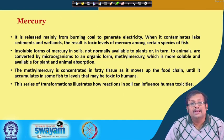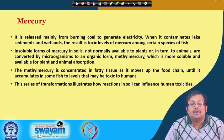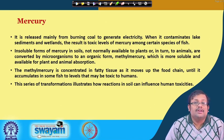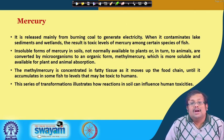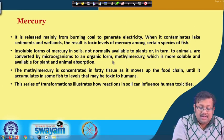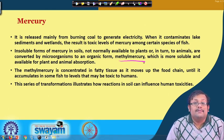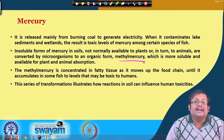The third important heavy metal is mercury. It is released mainly through burning coal to generate electricity. When it contaminates lakes, sediments, and wetlands, it results in toxic levels of mercury among certain species of fish, showing different types of biomagnification. Insoluble forms of mercury in soils, not normally available to plants or animals, are converted by microorganisms to an organic form called methylmercury. Methylmercury is more soluble and available for plant and animal absorption, and it is concentrated in fatty tissues, moving up the food chain to accumulate in fish at levels toxic to humans.